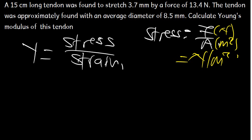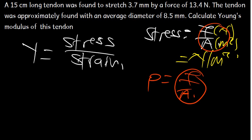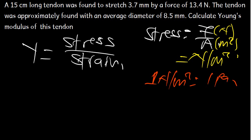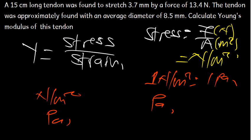From here, we also know that pressure is the force divided by the area. So pressure and stress give us the same formula — we can say that pressure and stress are the same thing. We know that one Newton per square meter is one Pascal. So pressure's SI unit is Pascal, and stress's SI unit is Newton per meter squared, or Pascal — it's the same thing.